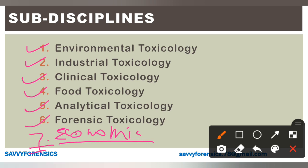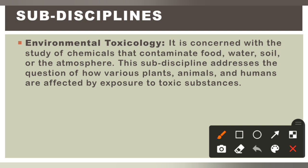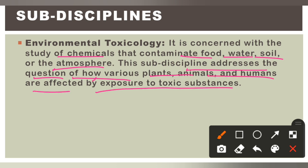Forensic toxicology is one part of this — the seventh part being economic toxicology. Now let's talk about environmental toxicology, which deals with the question of how various plants, animals, and humans are affected by exposure to toxic substances in the environment — through contaminated food, water, and soil.